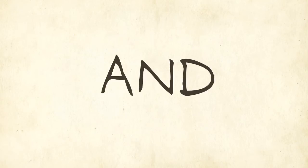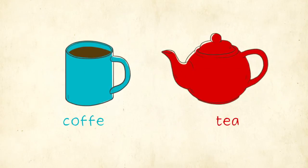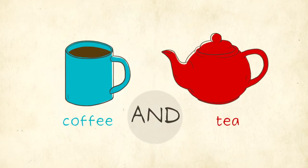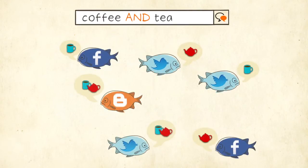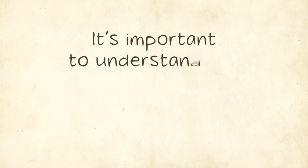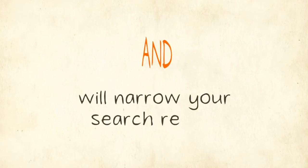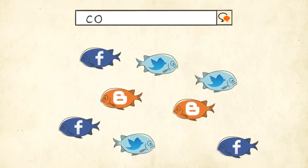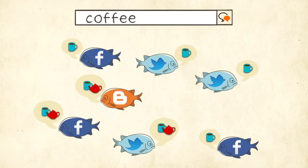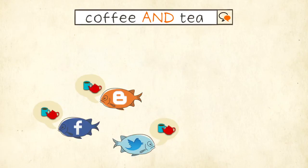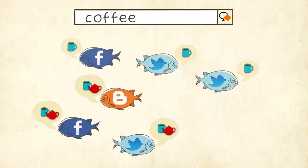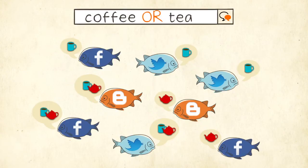Now we'll look at the AND operator, which allows us to narrow our results down. Let's say we're only interested in conversations that include coffee and tea. We simply enter that into our search query. This will eliminate any conversations that include only one of the two terms. It's important to understand the difference between AND and OR. Using AND in a Boolean query will narrow your search results — for instance, adding AND tea will eliminate all conversations about coffee that don't include both terms. However, if we replace AND with OR in our search query, we will expand our results to include all conversations that mention coffee as well as those that mention tea.